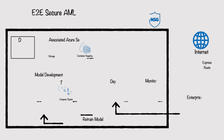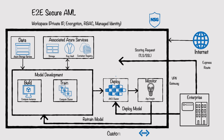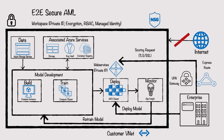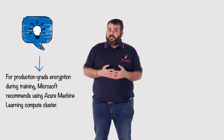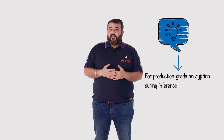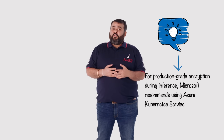These actions ensure your data is secure and encrypted at rest. Now let's look at encryption in transit. Azure Machine Learning uses TLS 1.2, which is a cryptographic protocol designed to provide communication security over a computer network. Azure uses TLS 1.2 to secure internal communications between various Azure Machine Learning microservices. All Azure storage access also occurs over a secure channel. All external calls made to the scoring endpoints also happen over TLS. Here's another pro tip: for production-grade encryption during training, we recommend using Azure Machine Learning compute clusters; and for production-grade encryption during inference, we recommend using Azure Kubernetes Service.